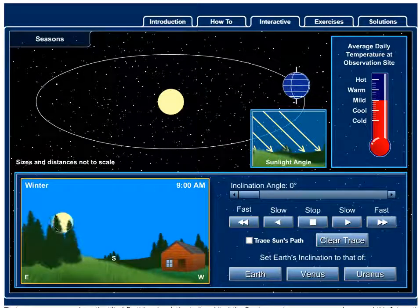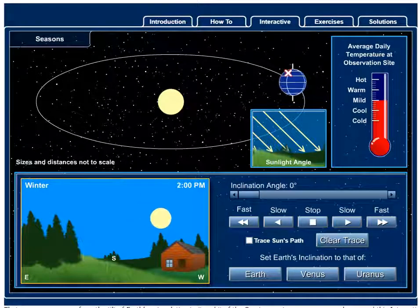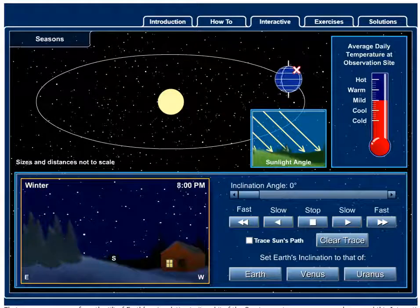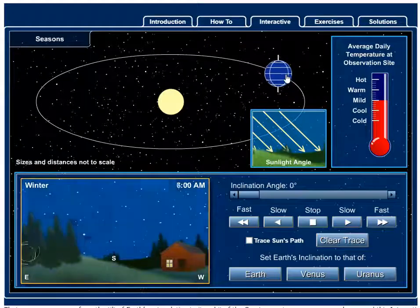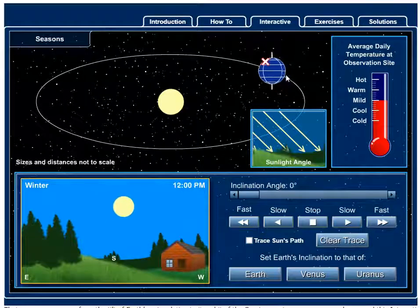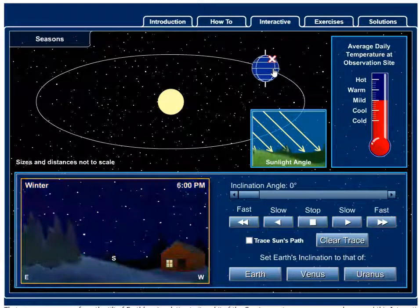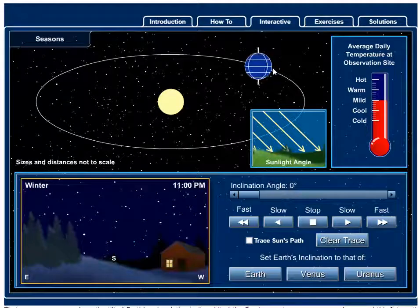This is the McGraw-Hill Seasons Interactive and it's going to help us understand how the directness of the Sun impacts seasons. Right now this planet is straight up and down. Earth has a 23 and a half degree inclination or tilt. This is not Earth right now because it's straight up and down.